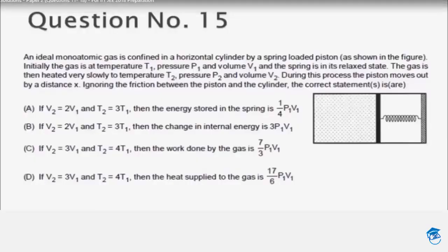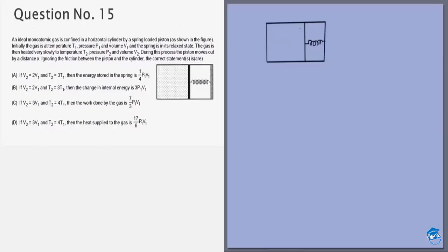In this question we are given a gas kept in a container and it is attached to a spring. Now initially the gas is at P1, V1 and T1, and finally it is at P2, V2 and T2. The number of moles will remain constant. So initially the gas is at P1 and we are given that the spring is relaxed.